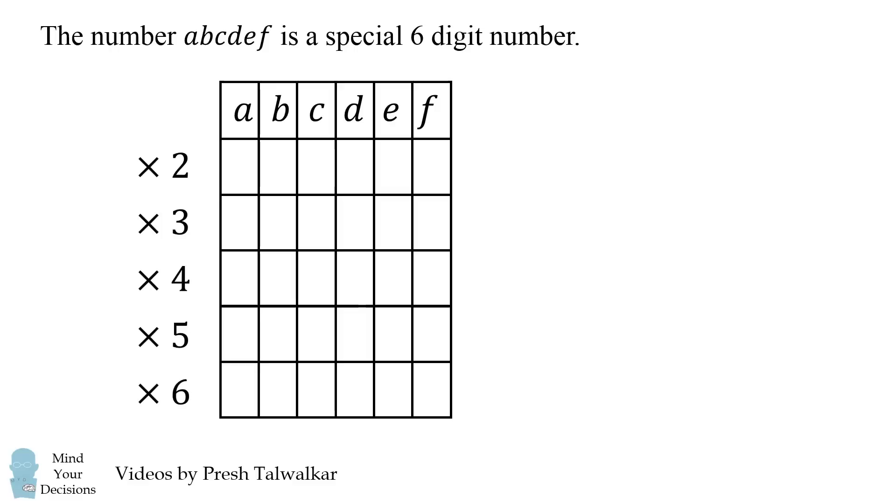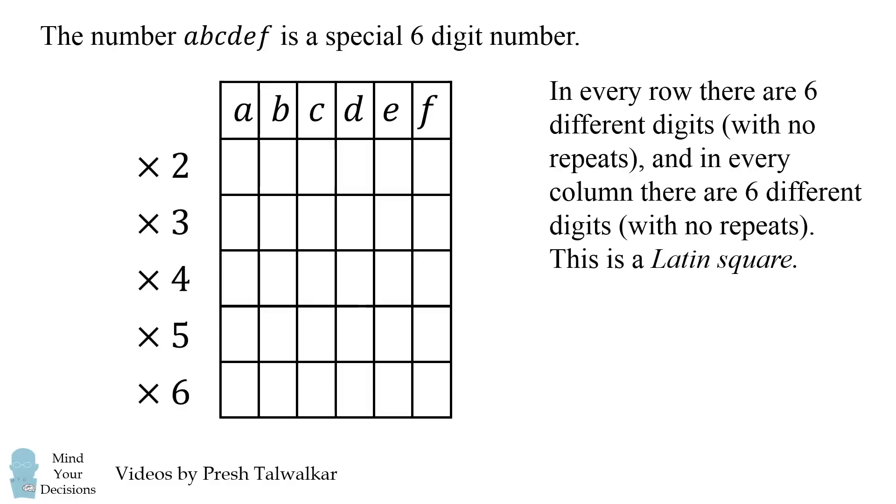This number has a special property. In every row there are six different digits with no repeats, and in every column there are six different digits with no repeats. In other words, this is a Latin square.